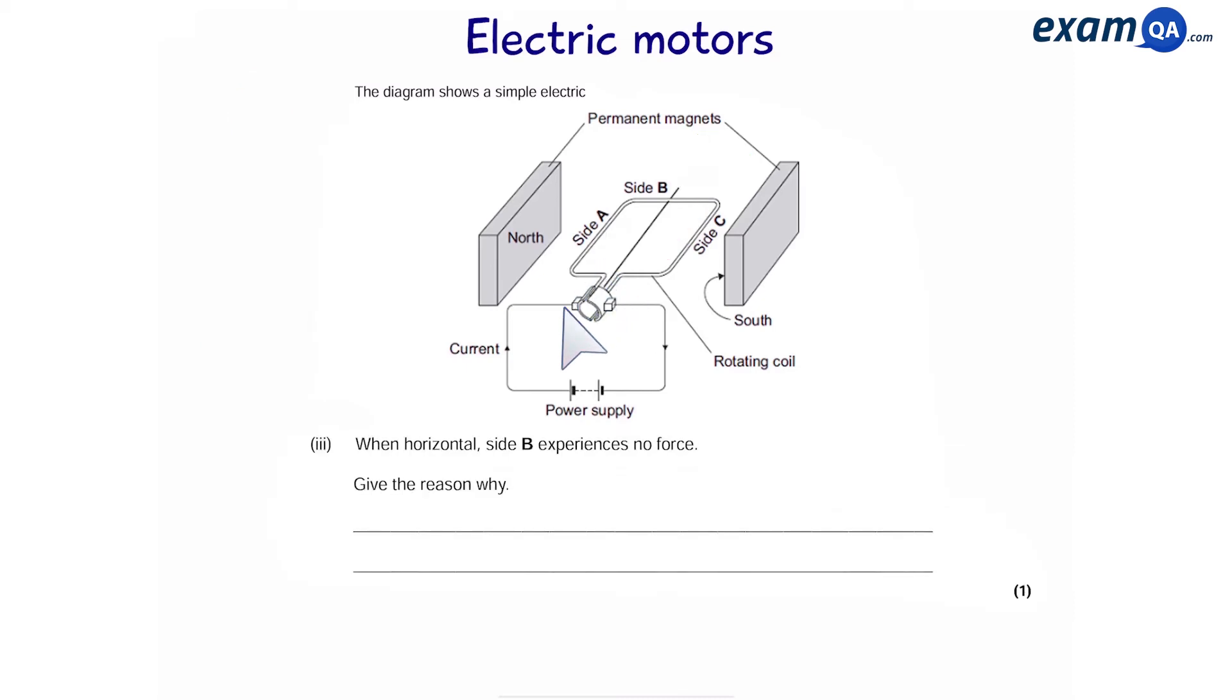When horizontal, side B experiences no force. Now remember, whenever you have a magnetic field and the wire is going through it, it will always experience a force - unless the direction of the current of the wire is parallel with the magnetic field. In this case, B and the field are parallel. So the current is parallel to the magnetic field, and therefore it will not experience any force.